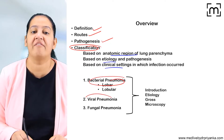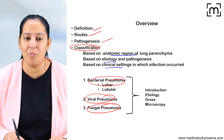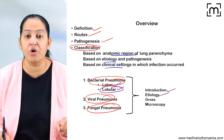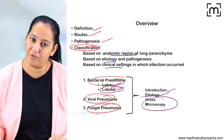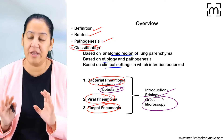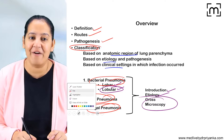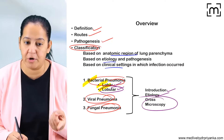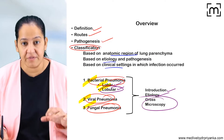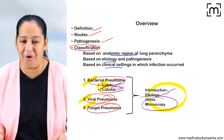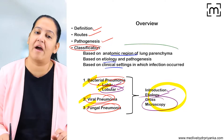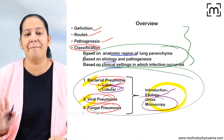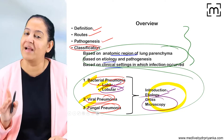I will teach you bacterial pneumonia, viral pneumonia, and fungal pneumonia. The bacterial pneumonias are of two types — lobar and lobular, with lobular also known as bronchopneumonia. For each of these pneumonias I will give you the introduction, etiology, and most importantly gross and microscopy, that is morphology. You have to frame your answer carefully based on whether the question is on bacterial, lobar, bronchopneumonia, viral, or fungal pneumonia — and write down only that section. Classification is common for all pneumonias.